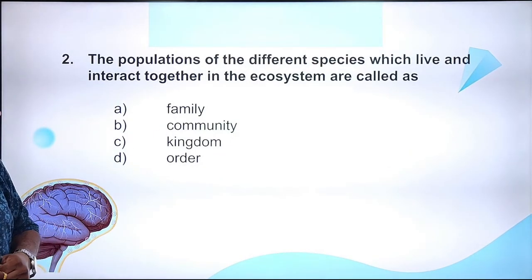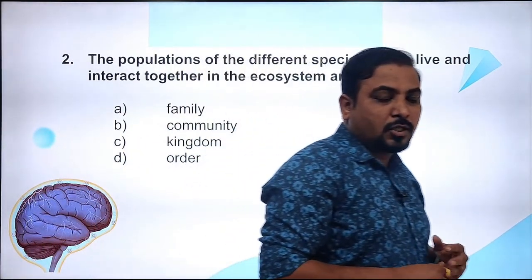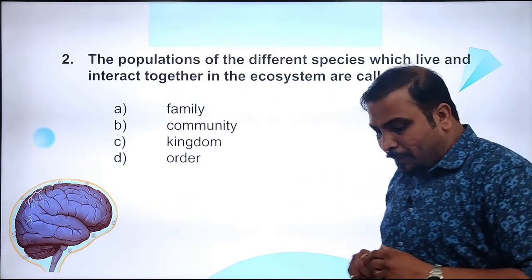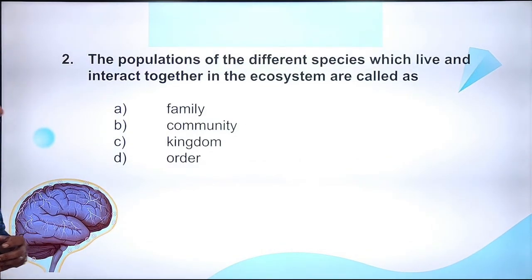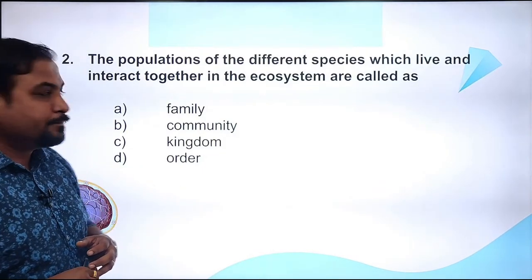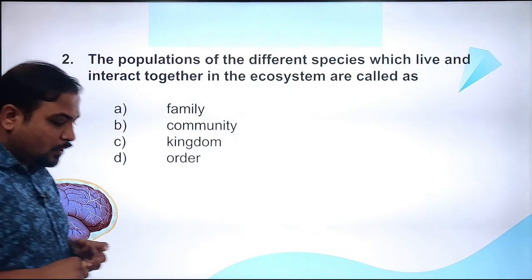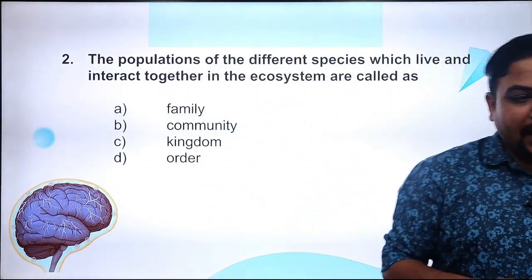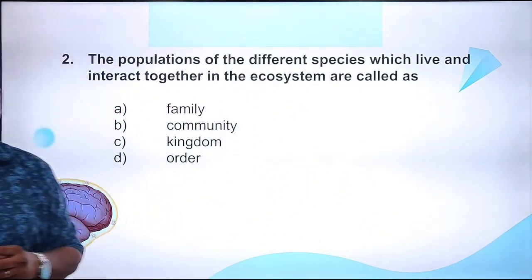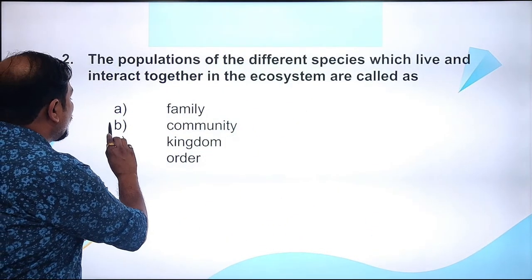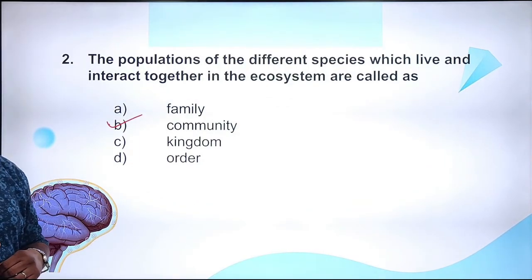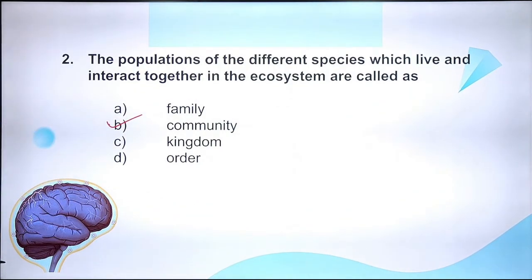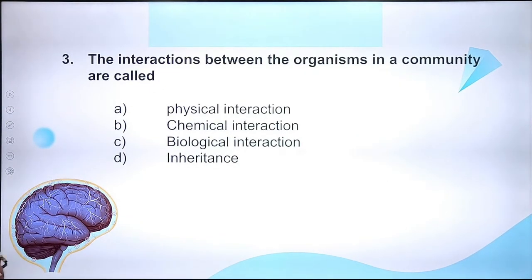Question 2: Populations of different species which live and interact together in an ecosystem are called - family, community, kingdom, or order? The group of populations is very popularly known as a community. The right answer is Option B.